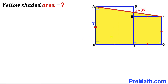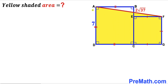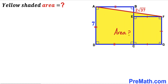Welcome to pre-math. In this video we have two squares ABCD and another square EFGC put together, such that the distance between point A and F is 2 times square root of 37 units, and the side length of the larger square is 7 units. Our task is to calculate the area of the yellow shaded region.